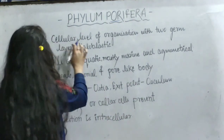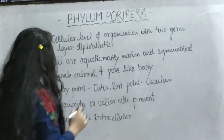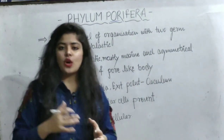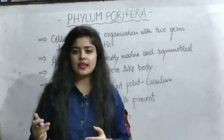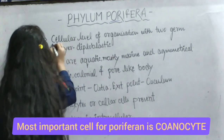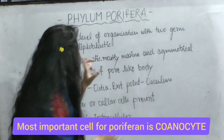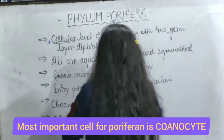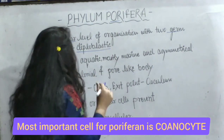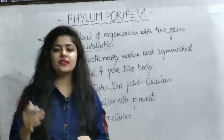First point: cellular level of organization with two germ layers — diploblastic. In cellular level of organization, the body is made up of cells. These organisms have two germ layers present in their body, which is why they are called diploblastic.